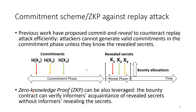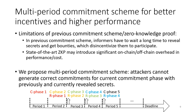There is also another approach to counteract the replay attack called zero-knowledge proof. The bounty contract can verify informers' knowledge of the reveal secrets without the informers actually revealing those secrets. However, there are limitations for both the previous commitment scheme and zero-knowledge proof. For the previous commitment scheme, informers have to wait a long time to reveal secrets and get bounties, which disincentivizes participation. Additionally, the owner has to wait a long time to get the report. For zero-knowledge proof, the current approach may introduce significant on-chain and off-chain overhead in performance and cost.